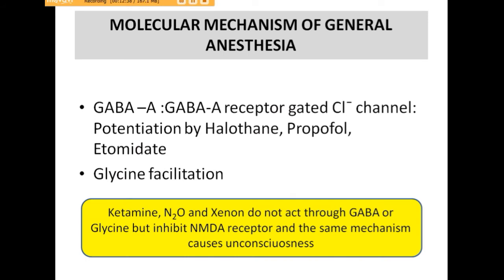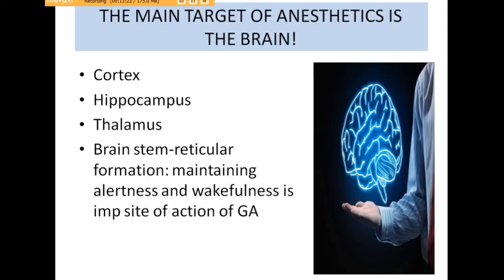General anesthetic agents facilitate inhibitory neurotransmitters — GABA and glycine. However, ketamine, nitrous oxide, and xenon do not act through GABA or glycine; instead, they inhibit NMDA receptors on which the excitatory neurotransmitter glutamate acts. This mechanism causes unconsciousness with ketamine, nitrous oxide, and xenon. The main target of anesthetics is the brain — specifically the cortex, hippocampus, thalamus, and brainstem, where the reticular formation system responsible for alertness and wakefulness is the important site of action.